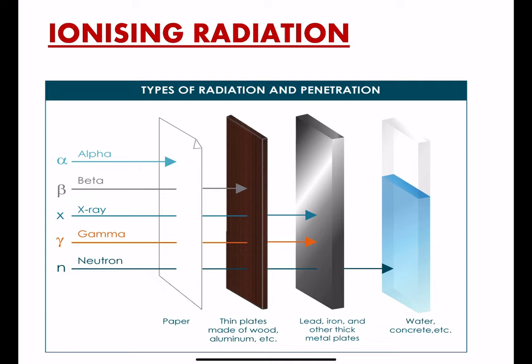Looking at ionizing radiation, in this diagram I have mentioned how much they can penetrate depending upon the types of ionizing radiation. Ionizing radiation is a radiation that carries enough energy to free electrons from atoms or molecules.